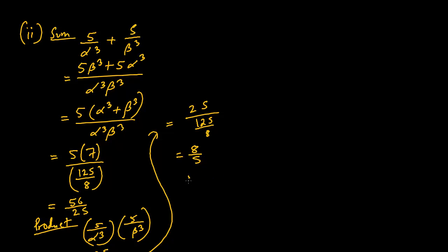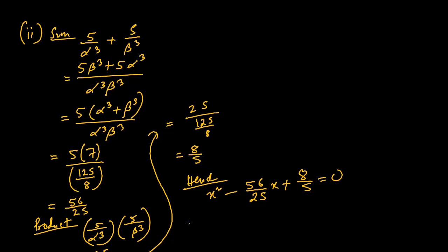We have found both the sum = 56/25 and the product = 8/5. The equation is x² − (56/25)x + (8/5) = 0. We need integer coefficients, so multiply both sides by 25: 25x² − 56x + 40 = 0.